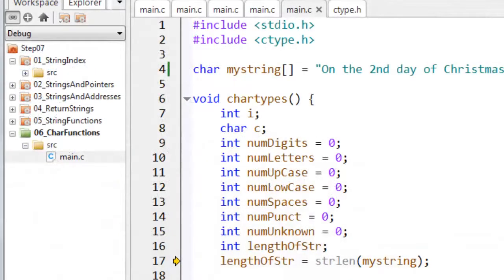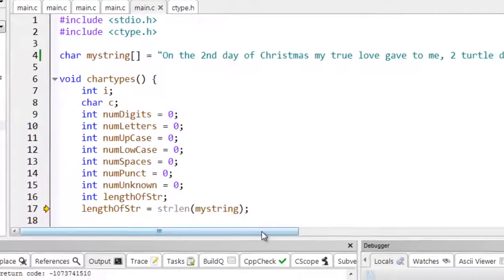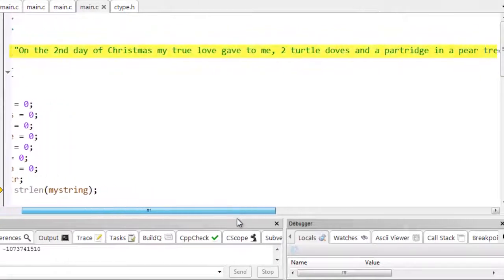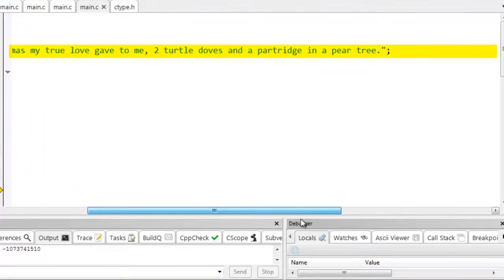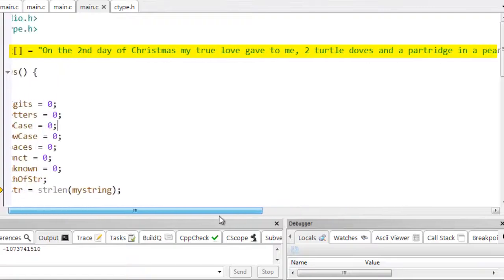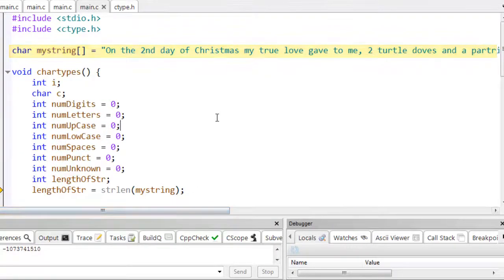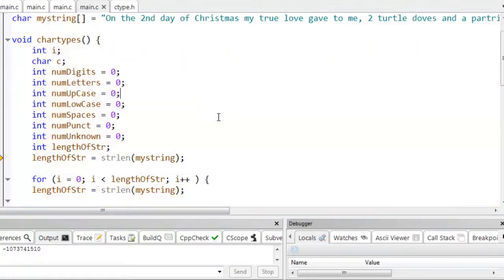Here I've got a simple program that you can try out a few of these functions in, it's 06 underscore char functions. This takes my string up here: On the second day of Christmas my true love gave to me two turtledoves and a partridge in a pear tree. And it calls the char types function here, and it tries to keep a count of the number of each type of character in that string.